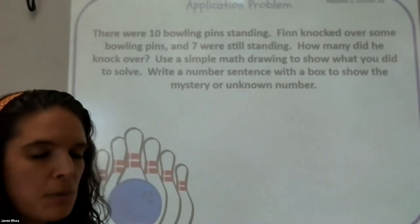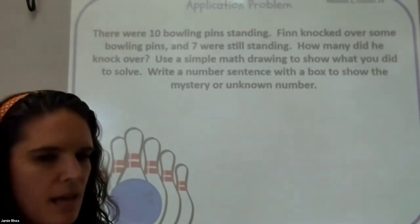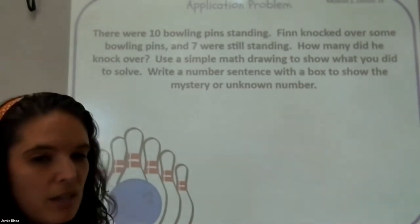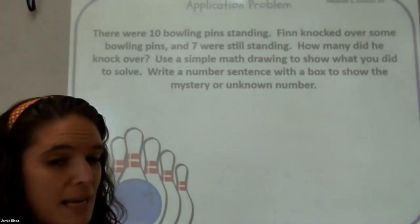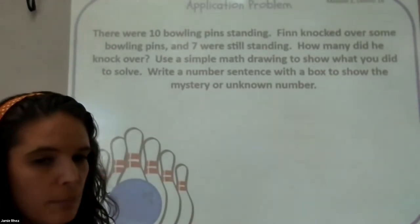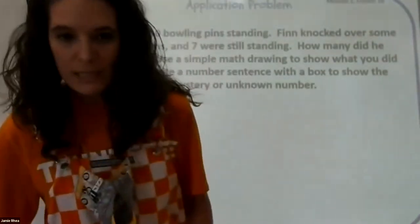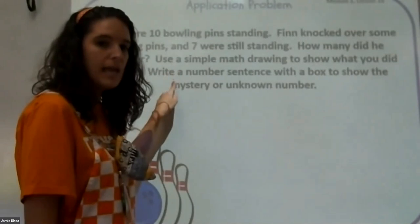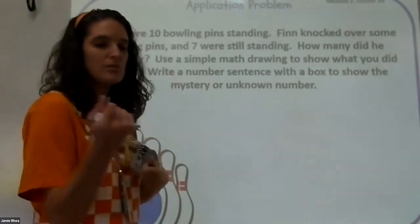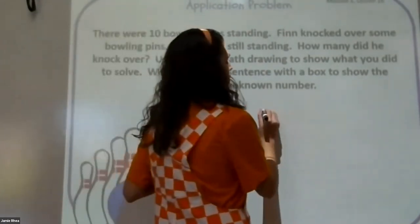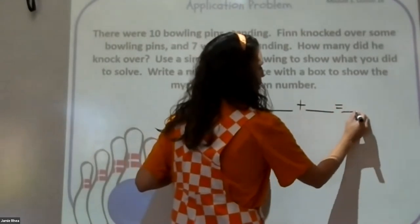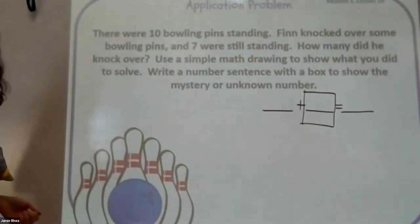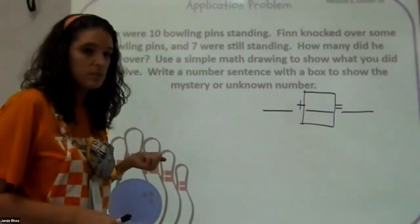Let's read it first, then go back and find what it wants us to do and what that important information is. There were 10 bowling pins standing. Ben knocked over some bowling pins and seven were still standing. How many did he knock over? Use a simple math drawing to show what you did to solve. Write a number sentence with a box to show the mystery or unknown number. It asked us to use a simple drawing and write a number sentence with a box to show the mystery number, so I'm going to make a blank template.